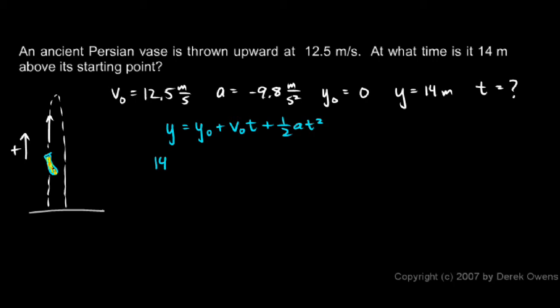The final height, y is 14 meters, equals the initial height is zero, so I'll just leave that out. We have v zero times t. V zero is 12.5 meters per second times t plus one half at squared. That's one half times negative 9.8 meters per second squared times t squared.